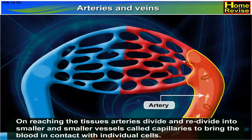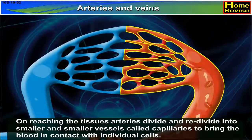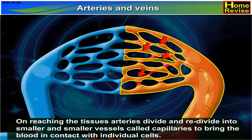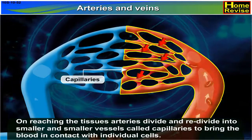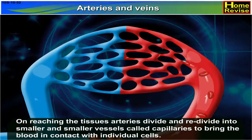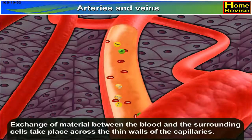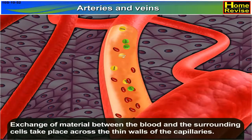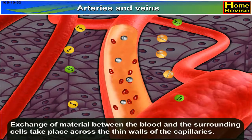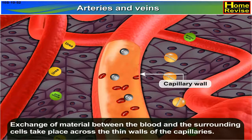On reaching the tissues, arteries divide and re-divide into smaller and smaller vessels called capillaries, to bring the blood in contact with individual cells. Exchange of material between the blood and the surrounding cells takes place across the thin walls of the capillaries.